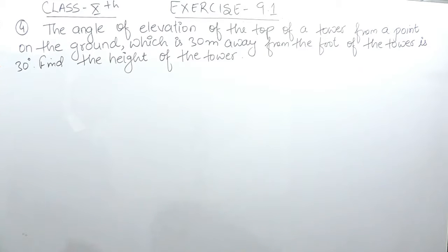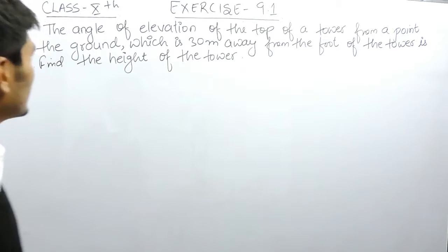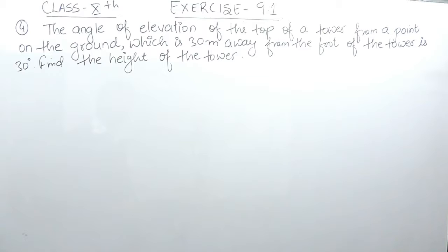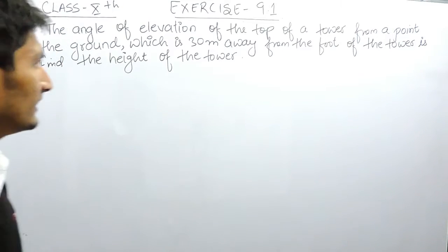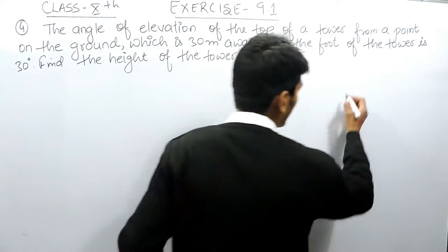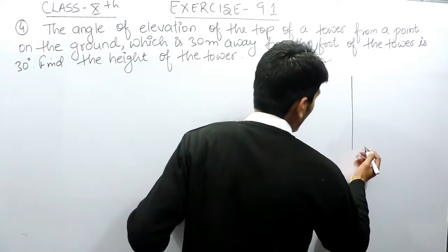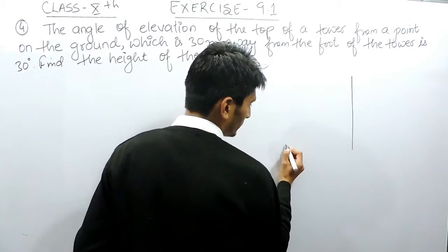The question says the angle of elevation of the top of a tower from a point on the ground which is 30 meters away from the foot of the tower is 30 degrees. This means there must be a vertical tower, and the angle of elevation from a point which is 30 meters away from the foot of this tower.